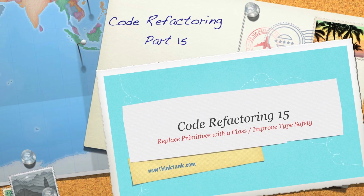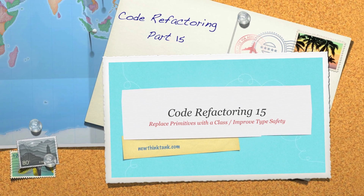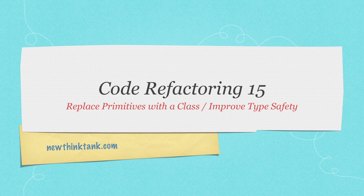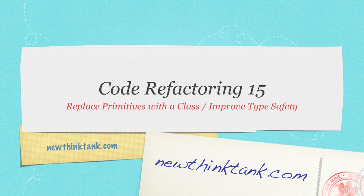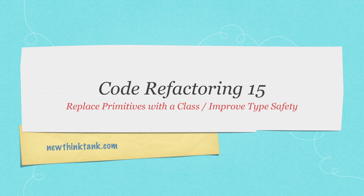Welcome to part 15 of my code refactoring tutorial. Today I'm going to talk about how to replace primitives with a class, or in other words, how to improve type safety. Type safety is extremely important and it is a topic that is very often completely ignored. What we want to do here is eliminate all operations on values that are not of the appropriate data type, and we're going to do this by protecting the program from bad input by replacing a primitive data type with a class.